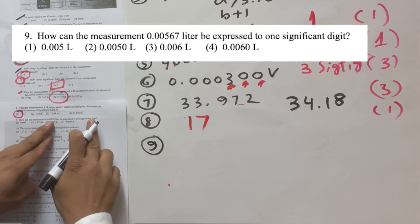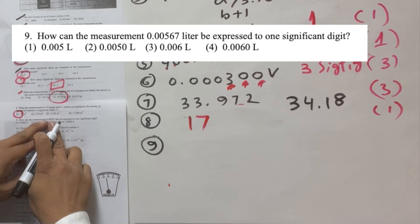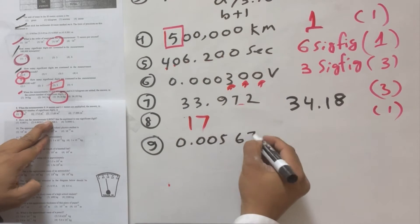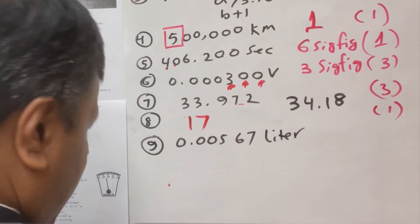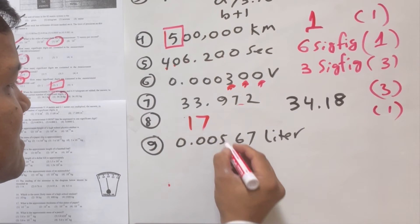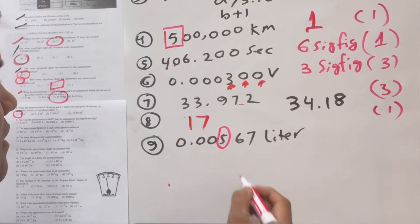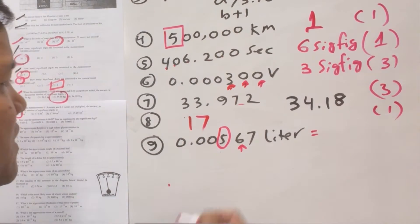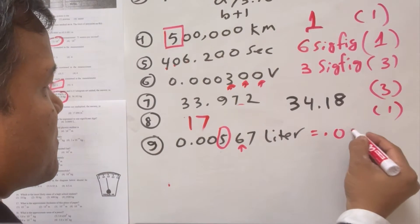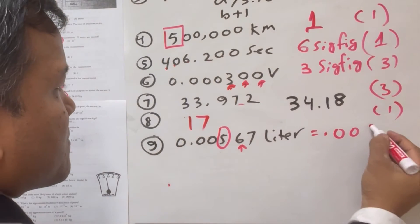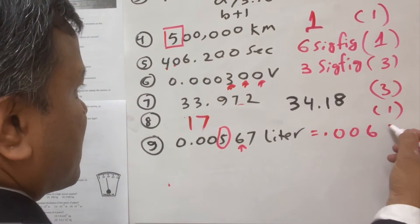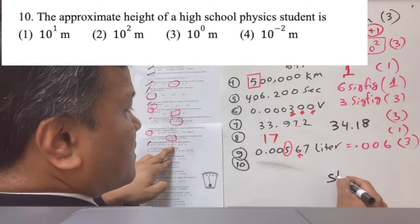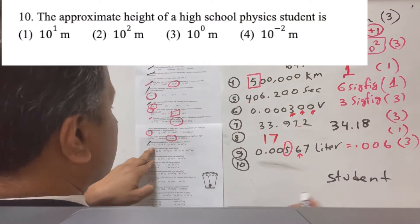Number nine: express 0.00567 liters to one significant figure. The first significant digit is 5; the next digit is 6, which is greater than 5, so round up. The answer is 0.006 liters, which is option number three.